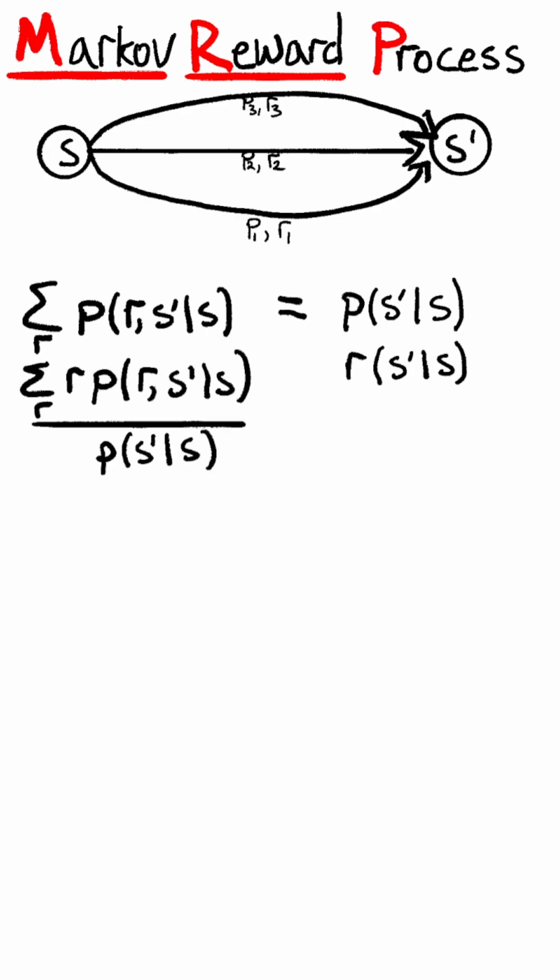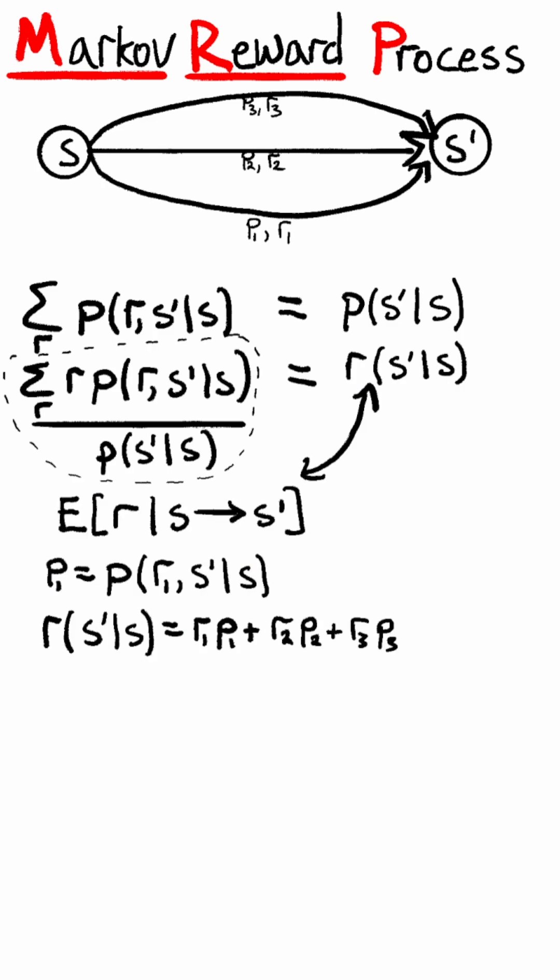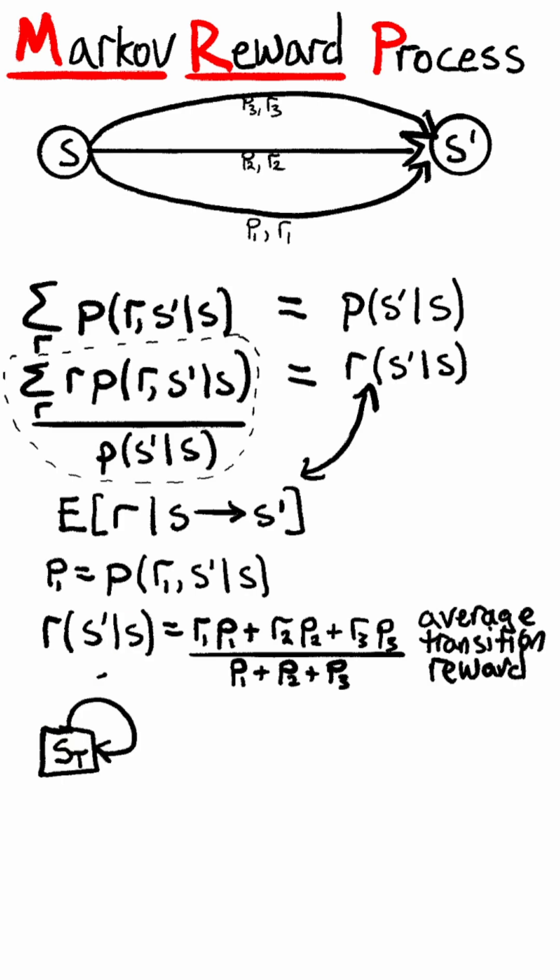The average reward function represents what we'd expect to receive when observing this transition repeatedly. For the example I've drawn, there are only three rewards to add up. For a terminal state, the only reward is zero, as is the average.